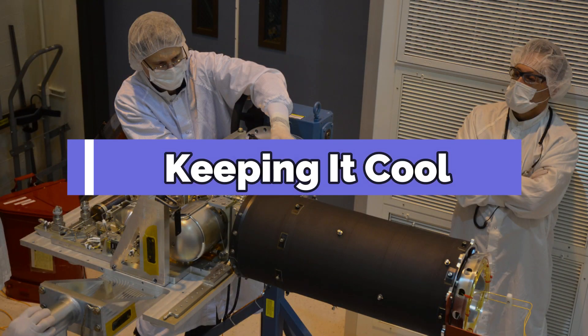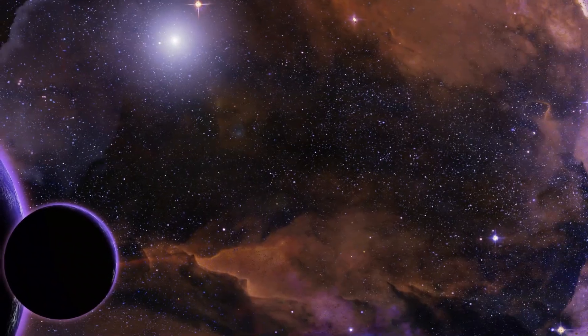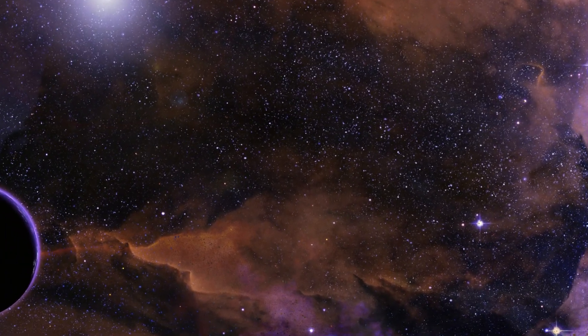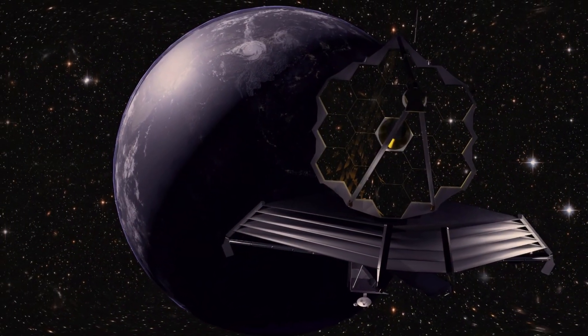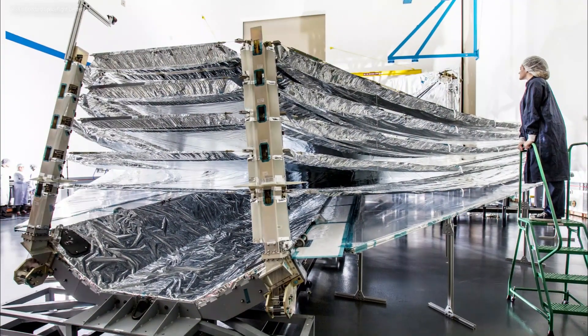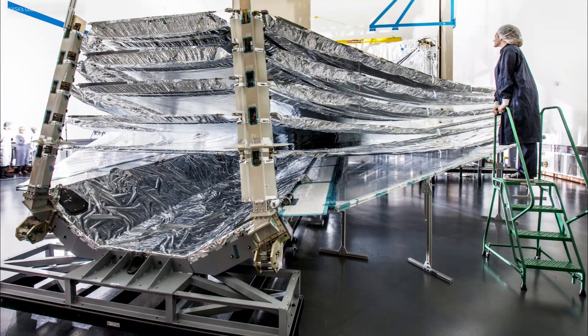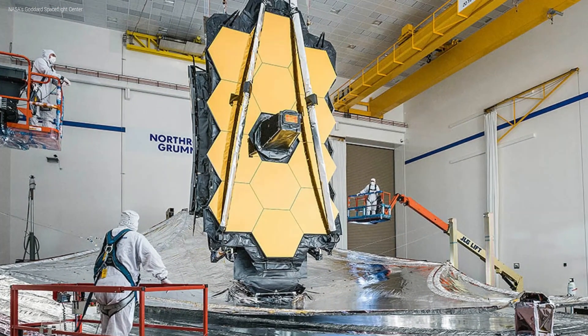Keeping it cool. Webb's cooling system is a work of art. To observe distant objects in the infrared range, the telescope must be incredibly cold to avoid interference from its own heat. It's equipped with a massive sun shield the size of a tennis court, keeping it cool and ensuring its instruments work flawlessly.